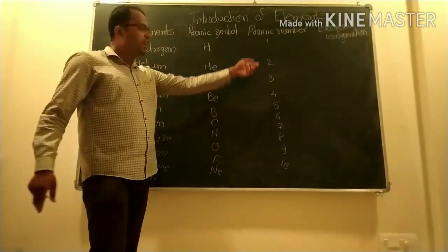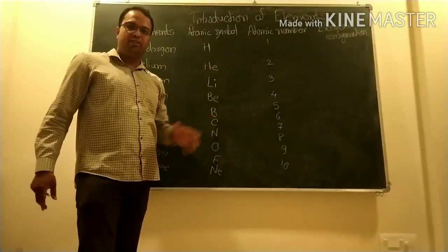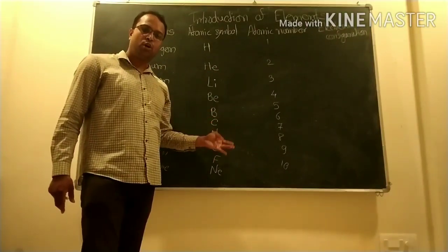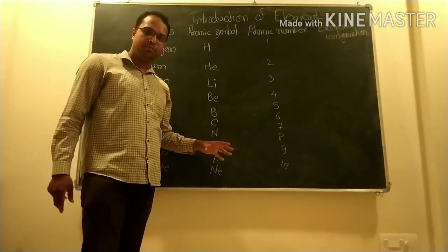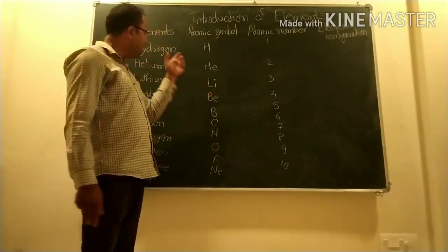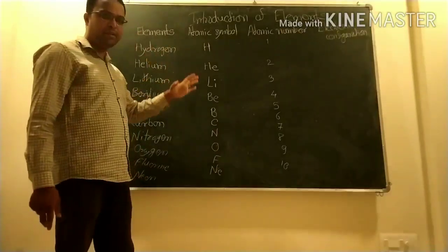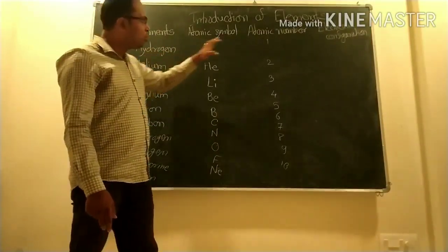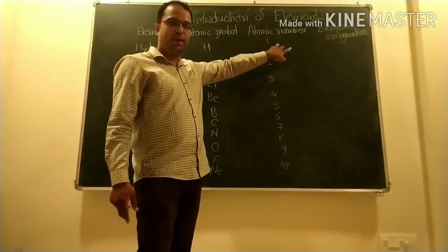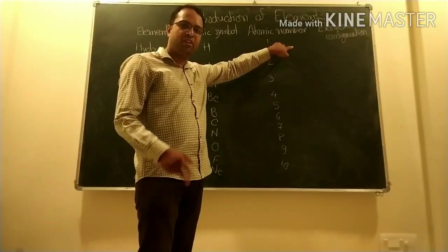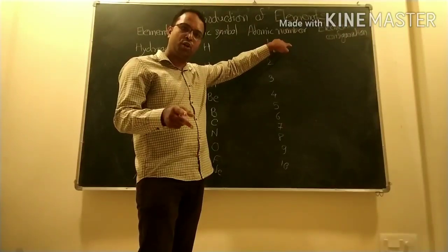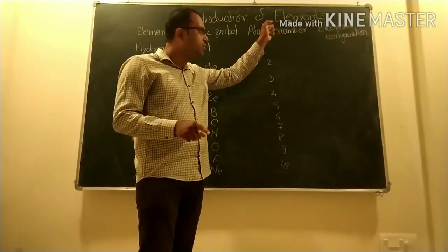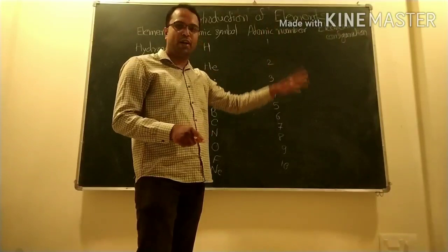Atomic number is nothing but the number of protons or number of electrons of that element. For Hydrogen, atomic number is 1, which means the number of protons and electrons are both 1.